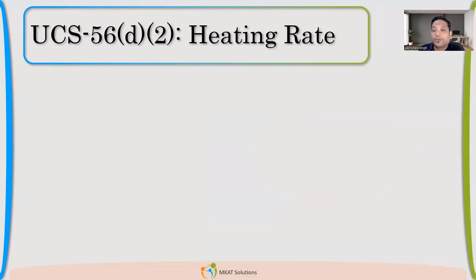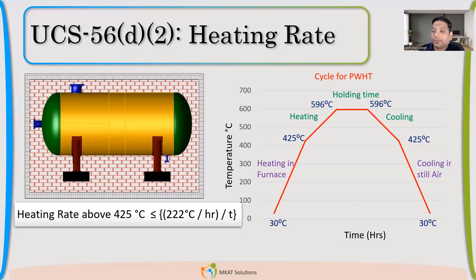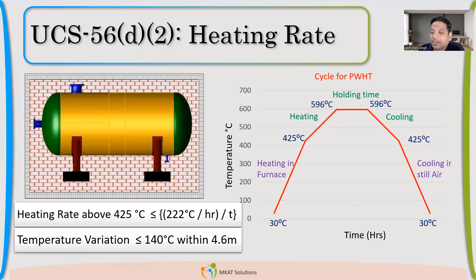The furnace temperature must be less than 425°C — that is the first requirement. Next, there is a requirement related to heating rate. Once the job is in the furnace, you have to maintain a heating rate of 222 degrees Celsius per hour divided by thickness. This rate depends upon the governing thickness for the post-weld heat treatment. If you are working in inches, the holding time requirement is 1 hour per inch, and in all calculations we have to convert the thickness accordingly.